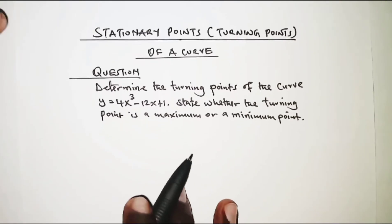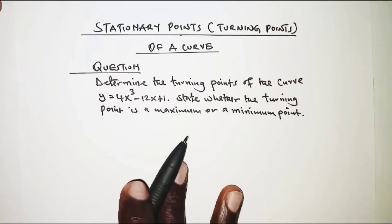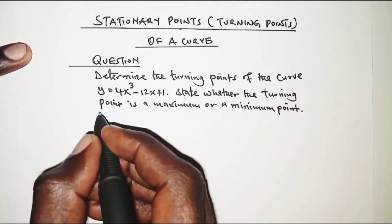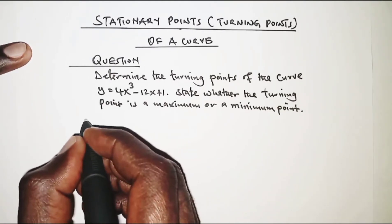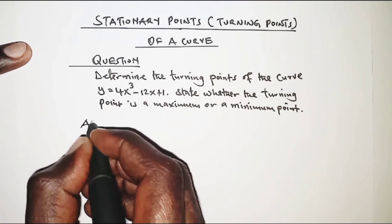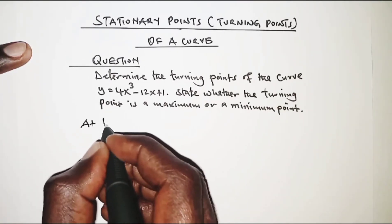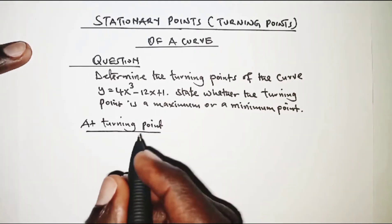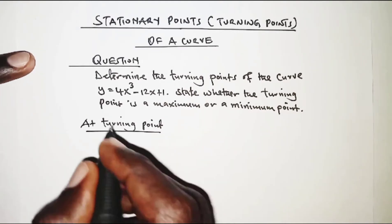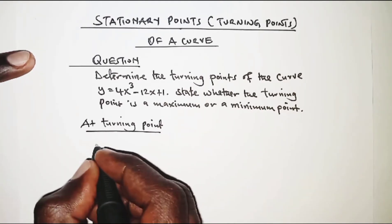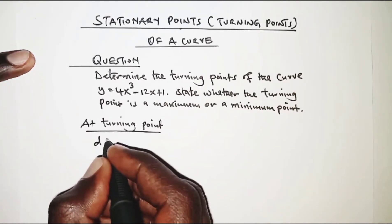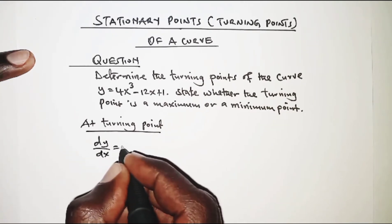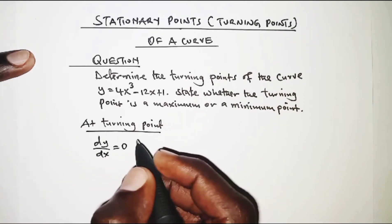The first thing is that at the turning point, the gradient of a curve is usually 0, so dy/dx is equal to 0.